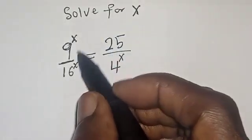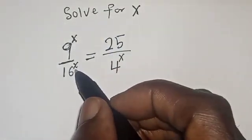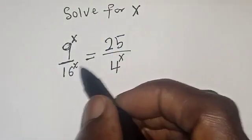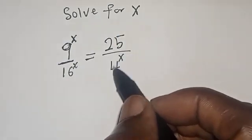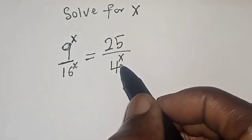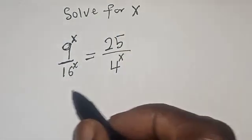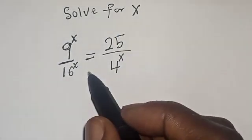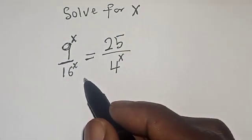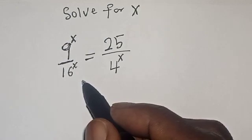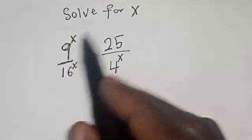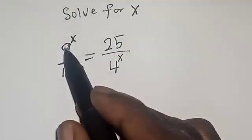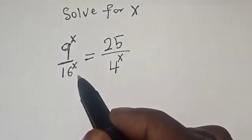So for x: 9 raised to power x divided by 16 raised to power s is equal to 25 divided by 4 raised to power s. Hi everyone, welcome to my class. In this class, we quickly want to find the value of s from this given nice exponential equation.